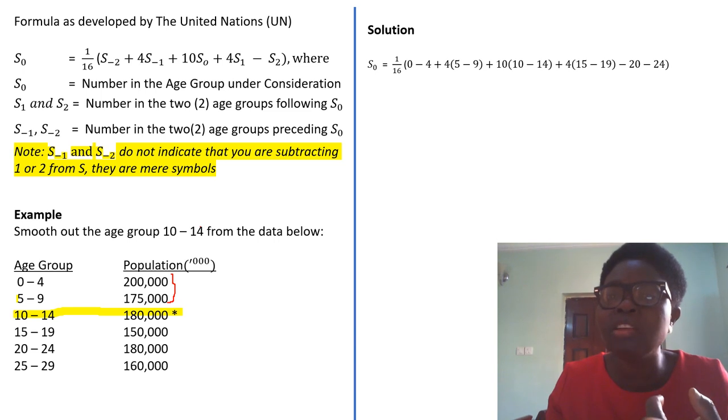Then you open the brackets. If you go further, we are having 4S₁. The 4S₁ here will give us four into what is the first thing after preceding? 15 to 19, that is the age group that you are putting down here. Then that follows the next one, S₂. The S₂ is another year preceding it, that is age 20 to 24.